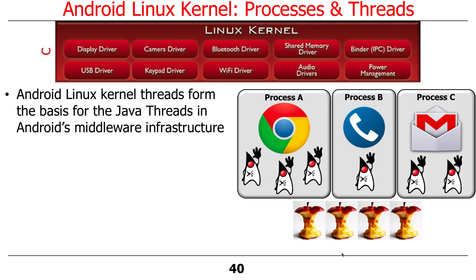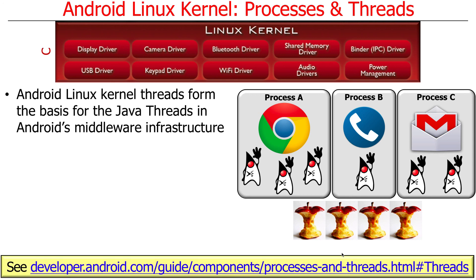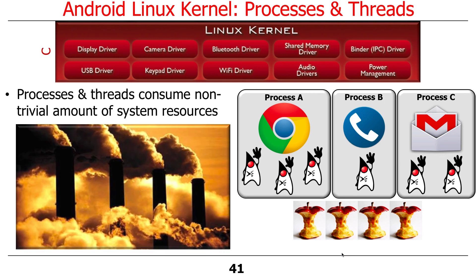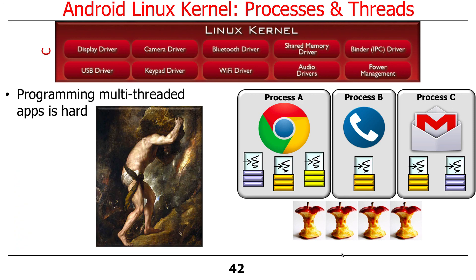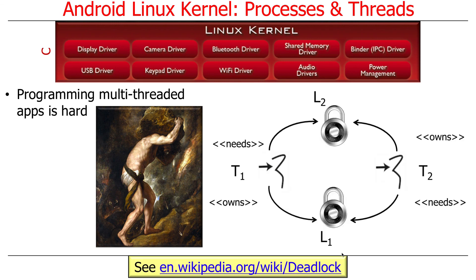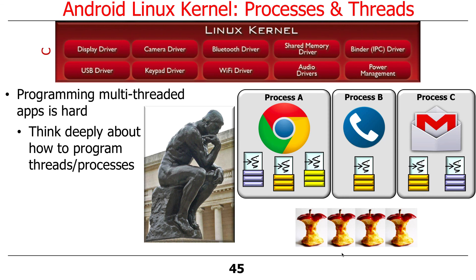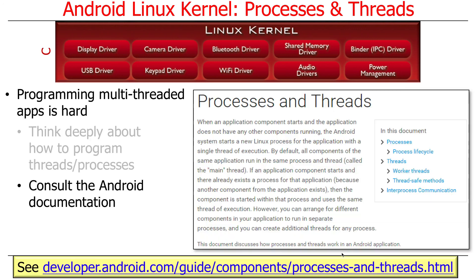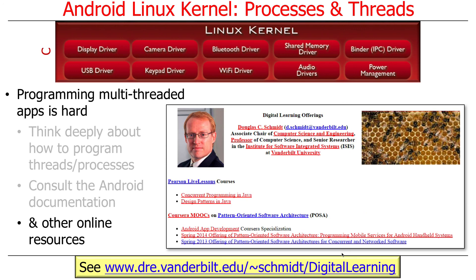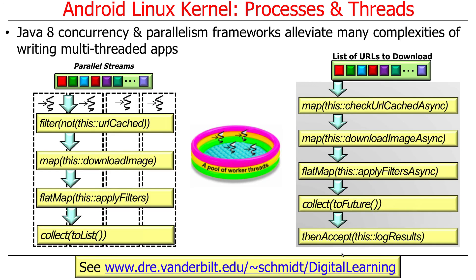Android threads — the Linux kernel threads — form the basis for all the other threads we've talked about, like Java threads. It's important to remember that threads and processes consume a lot of resources — they don't come for free. Programming multi-threaded apps is hard: there are race conditions, deadlock, and other hazards, so you need to think very deeply, especially at the systems programming level. The best news is that if you are well-versed in Java 8 features like parallel streams, completable futures, and the fork-join pool, many — not all — but many of the complexities of the lower-level stuff disappear.